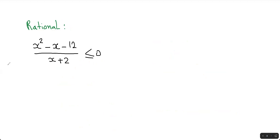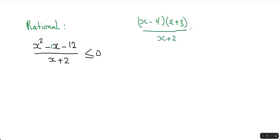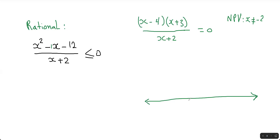Now the hardest one for last. I'm going to factor the top, giving me x minus 4 times x plus 3 — two numbers multiplied to give negative 12 and add to give negative 1, so negative 4 and 3 — all over x plus 2. I'm going to write equals 0 and solve this. When dealing with rational inequalities, we have a non-permissible value: x cannot equal negative 2, because we cannot divide by 0.